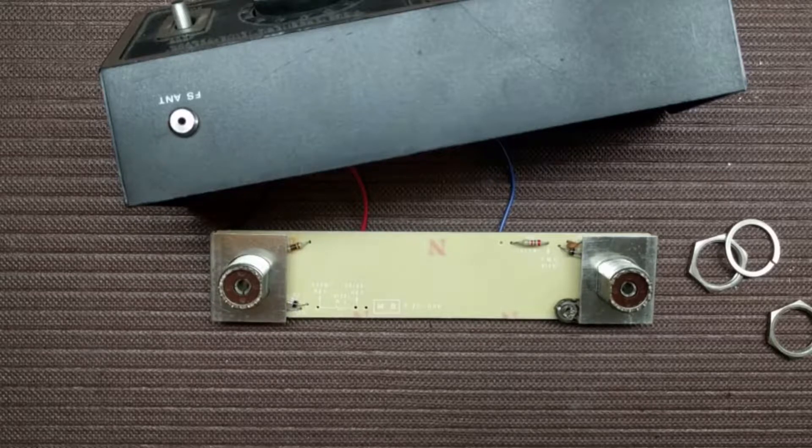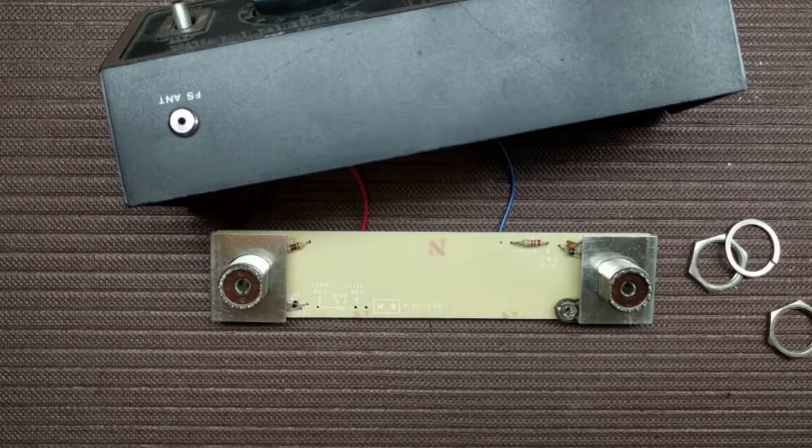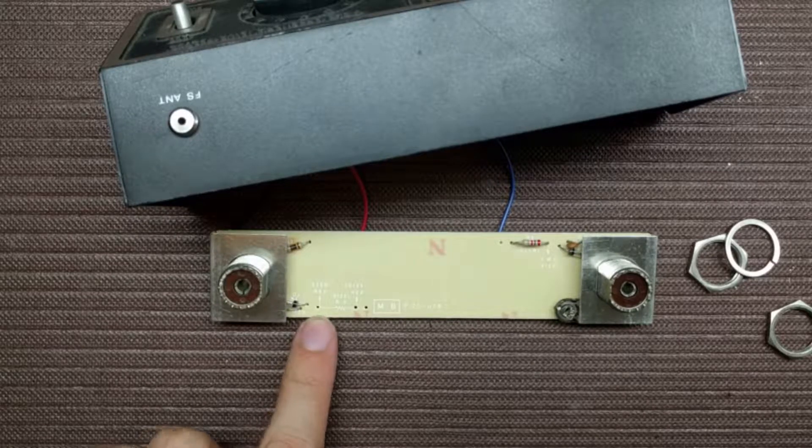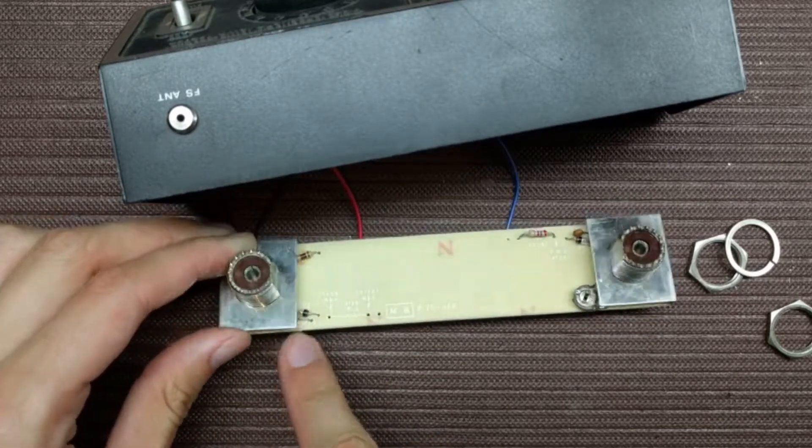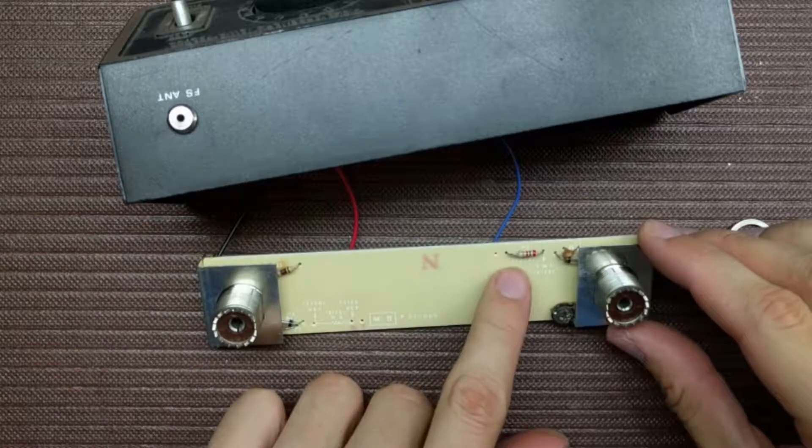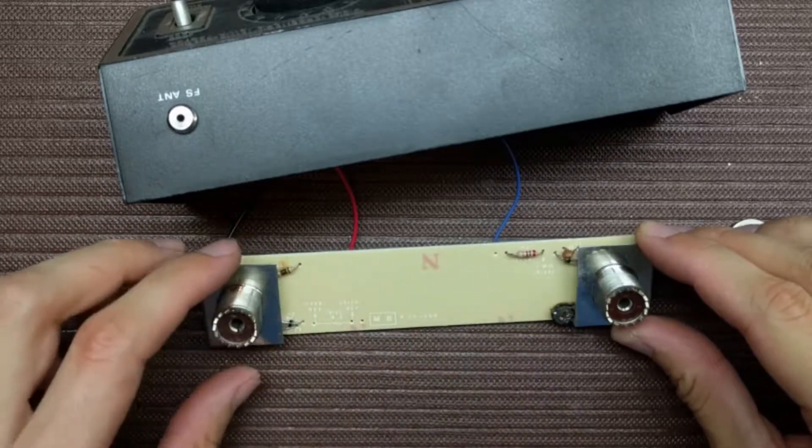Okay here we can see the PCB in a little bit closer detail. As you can see we have a diode here, a little capacitor here, and a resistor. Same over here we have a resistor, a diode, and a capacitor.